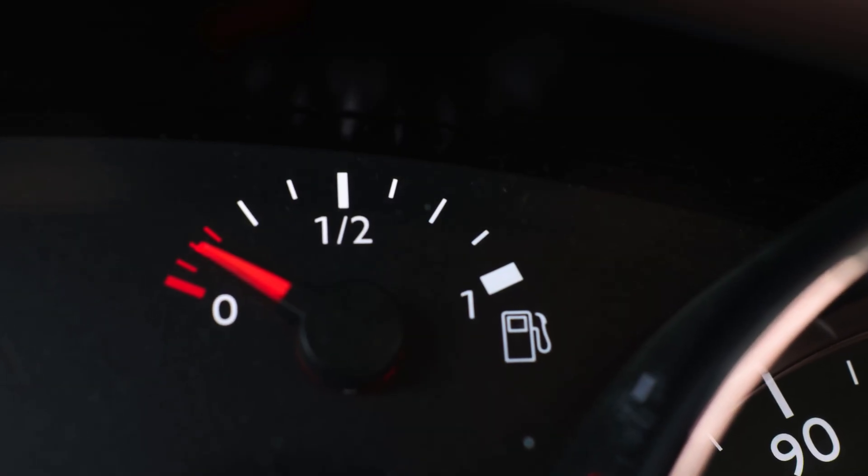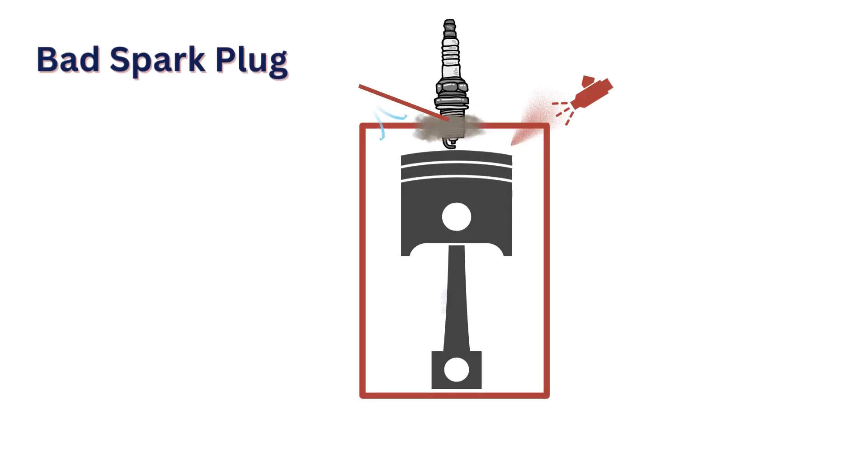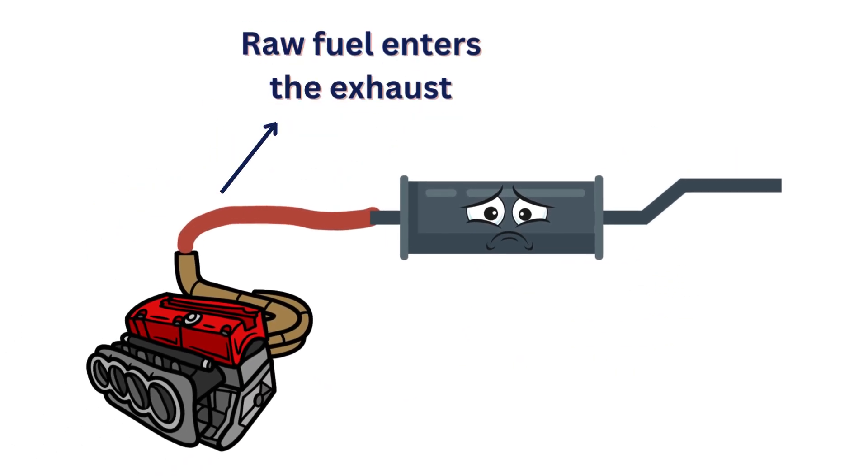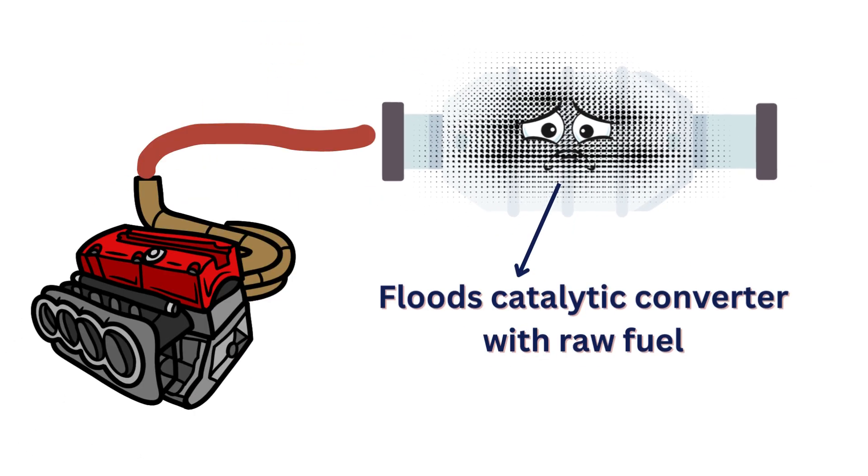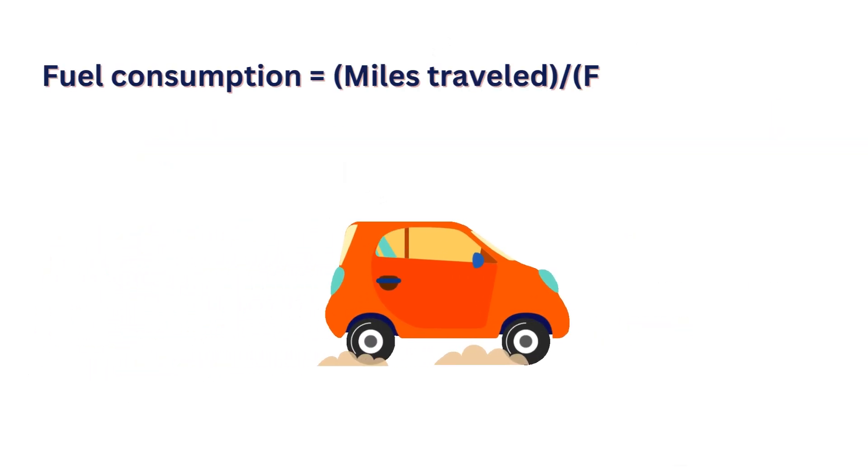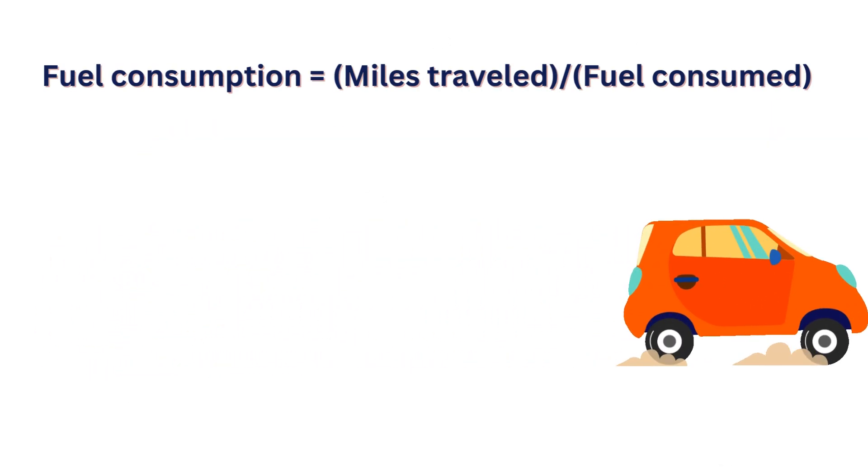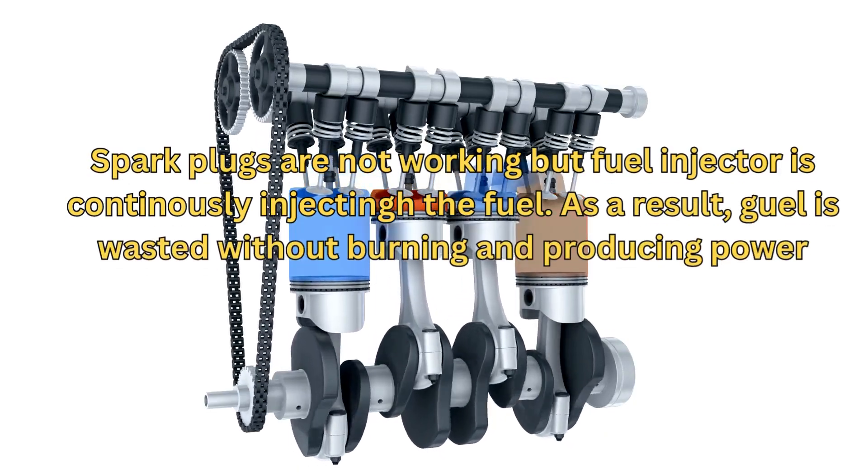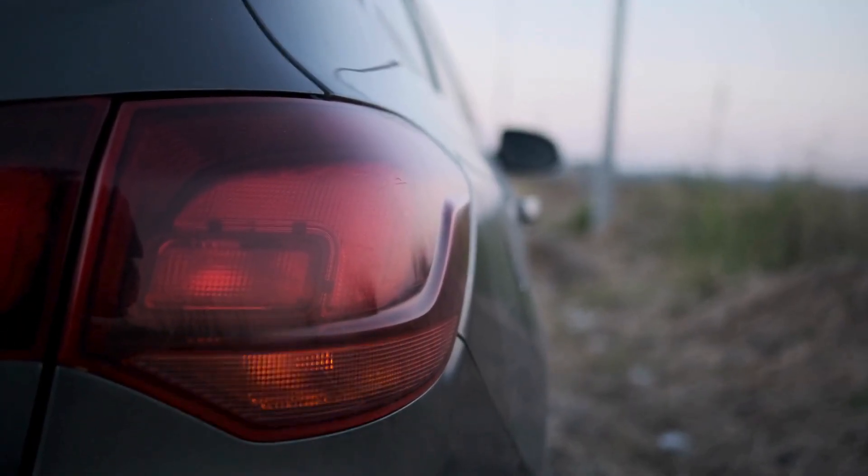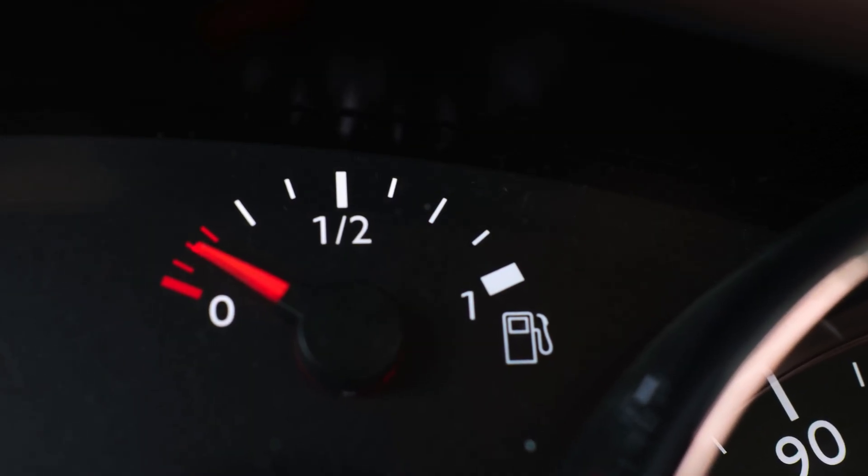The fifth symptom is a decrease in fuel economy. Due to misfires caused by bad spark plugs, some of the fuel remains unburnt. This raw fuel is dumped into the exhaust and also damages the catalytic converter. Fuel consumption is described as the number of miles covered by a vehicle after consuming one gallon of fuel. Since the fuel is being wasted without burning and producing power, your car will cover less distance by consuming more fuel. The result will be a decrease in fuel economy.